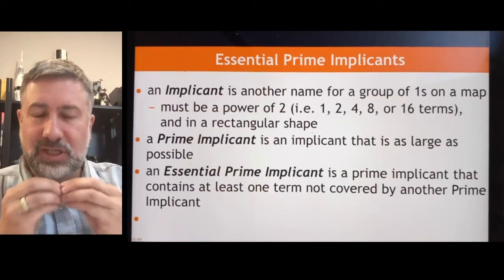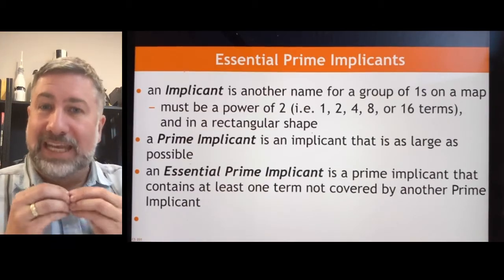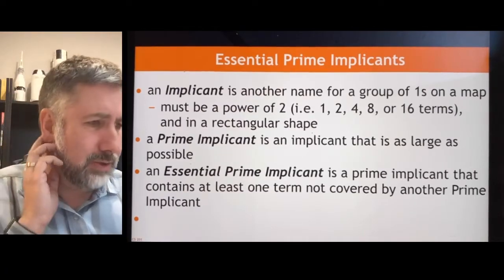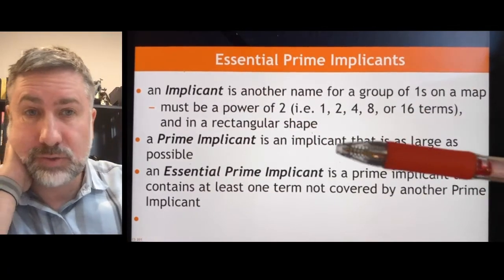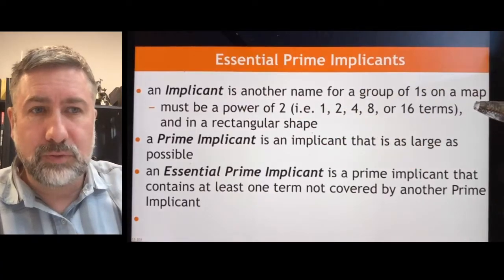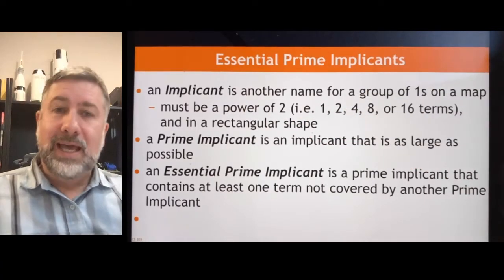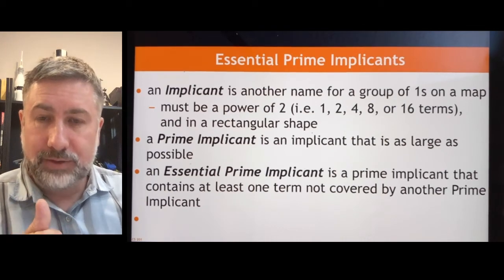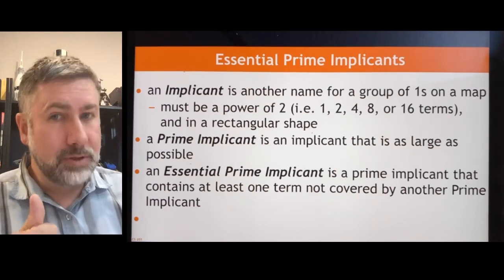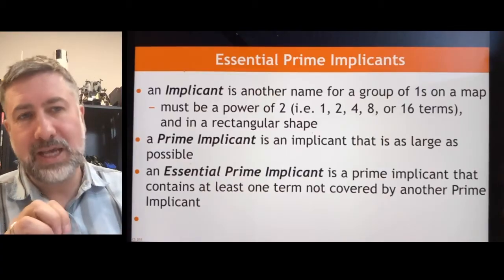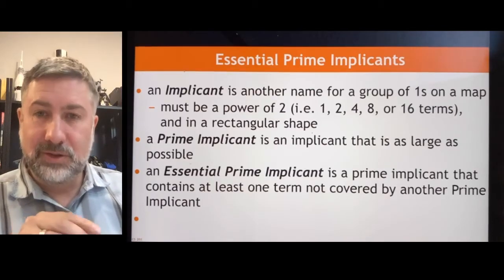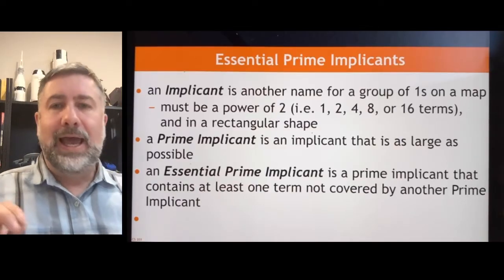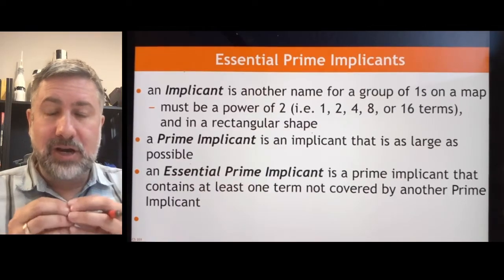A group of terms in a K-map is called an implicant. An implicant is a group of ones on a map. An implicant has to be a power of 2 — so you could have an implicant of 1 minterm, 2 minterms, 4 minterms, 8 minterms, or 16 minterms. Each one on the map corresponds to a minterm in your truth table and you can build them in groups that are a power of 2.